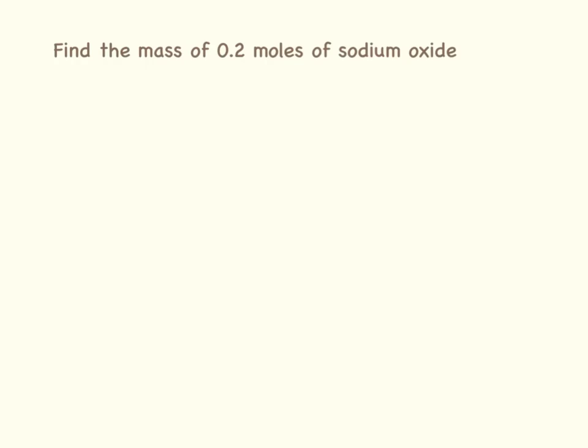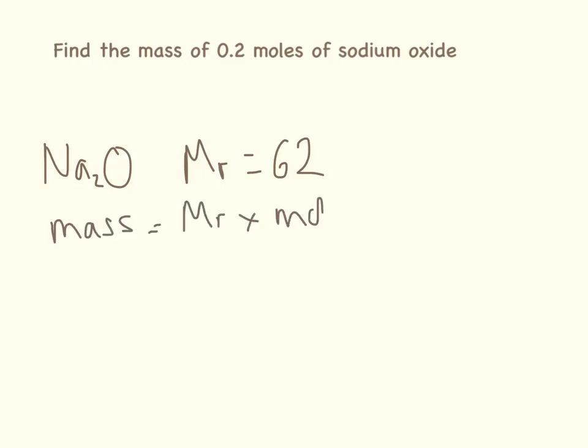So here we need to find the mass of 0.2 moles of sodium oxide. Now, sodium oxide I talked about earlier in this video, and its formula is Na₂O. So the MR for that is 62. The equation we're using is mass equals MR times moles. So 62 times 0.2 from the question is equal to 12.4 grams. And don't forget to put your units on.